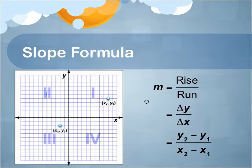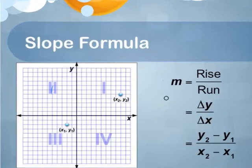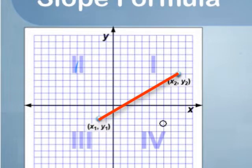This is the slope formula. Use it when you want to find the slope of the line that connects two points.